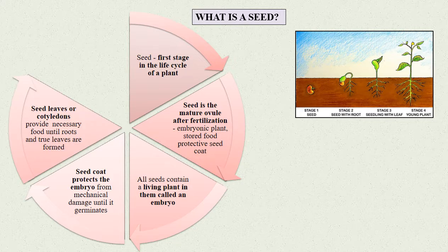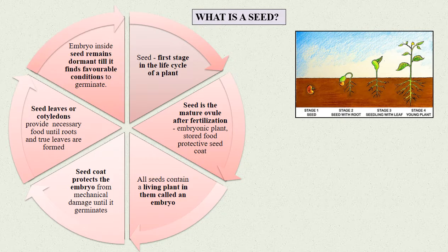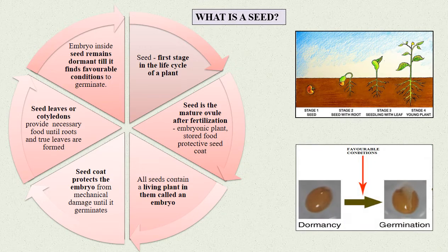The seed leaves or cotyledons provide the necessary food until roots and true leaves are formed. The embryo inside the seed remains in dormant stage until it finds favorable conditions to germinate.